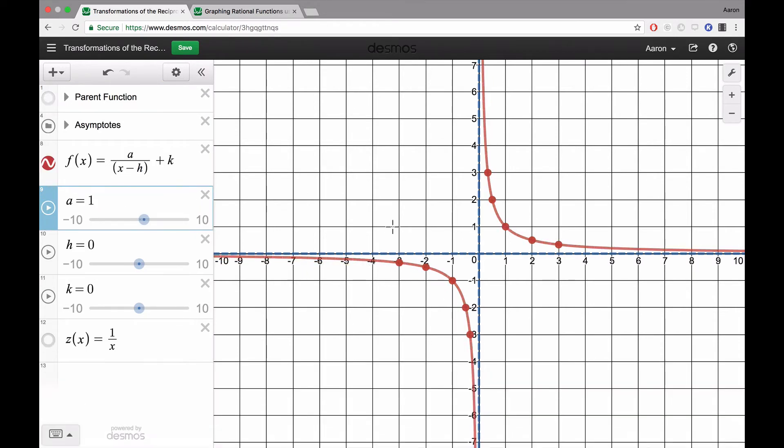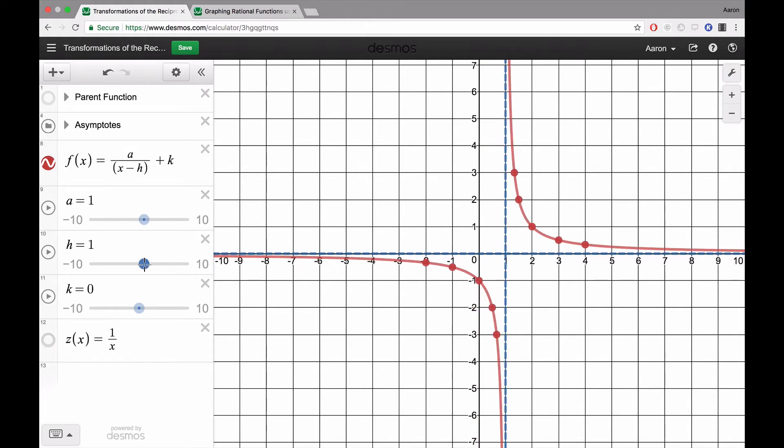This is our parent function. The h value, what's with the x, that's going to be our horizontal shift. If I make h = 1, that means I'm going to shift my graph to the right 1 unit. We can see that from the parent function, it's just shifted right 1 unit.